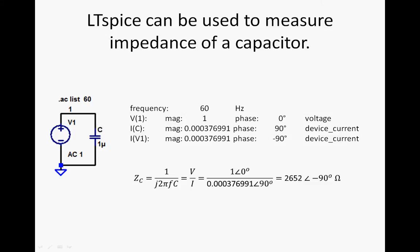If we plug this into our impedance equation, we just put 1 with a phase of zero, 1 volt, divided by the current with a phase of 90, and we get 2,652 ohms with a phase of minus 90. Because when you divide with phasor notation, you subtract the bottom phase from the top phase.